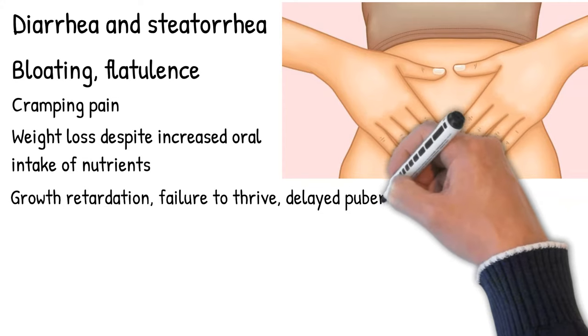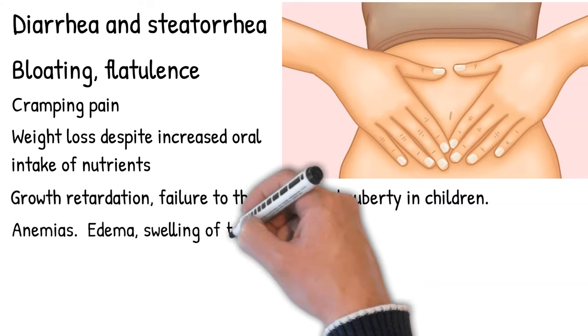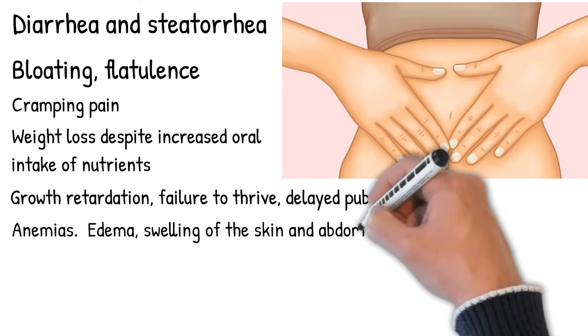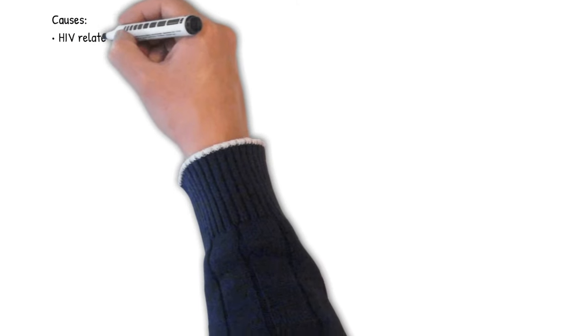Anemias. Edema, swelling of the skin and abdomen. Muscle cramps from decreased vitamin D and calcium absorption, also leading to osteomalacia and osteoporosis. Bleeding because of deficiency of vitamin K.